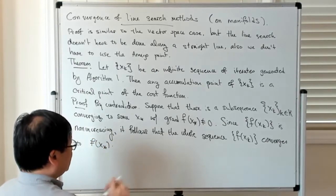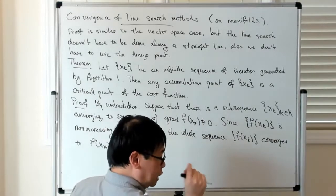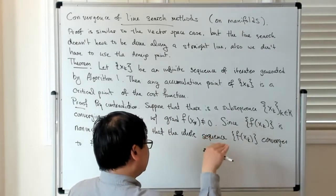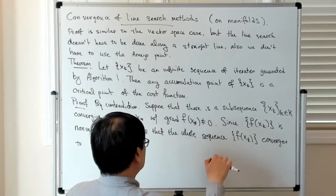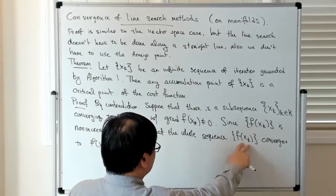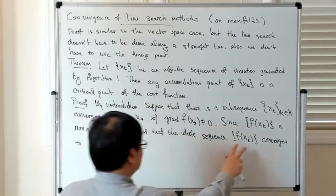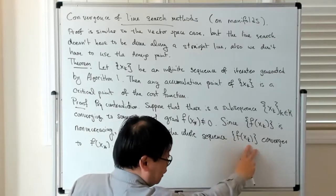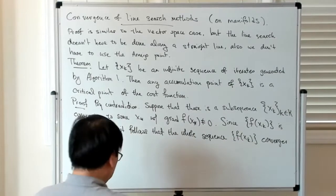To be clear, I'm looking at the function values on the iterates, and we know that function value is bounded from above because it's not increasing. So that then allows you to conclude that the whole sequence of function values converges to the limiting function value.